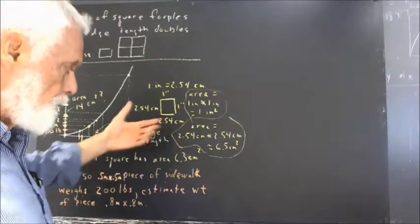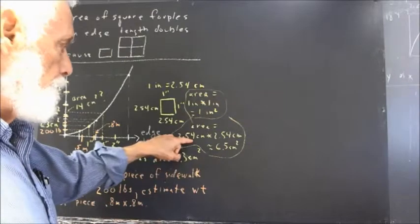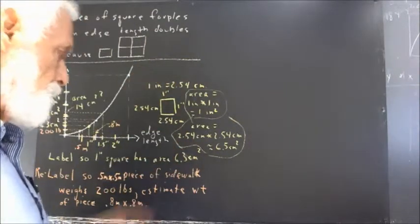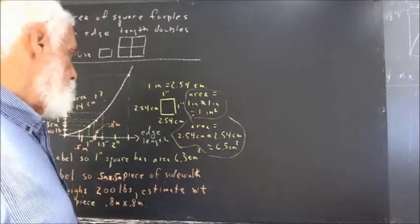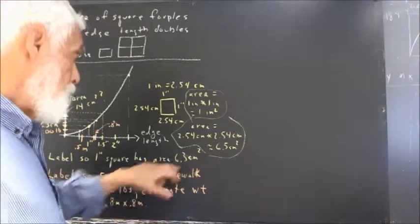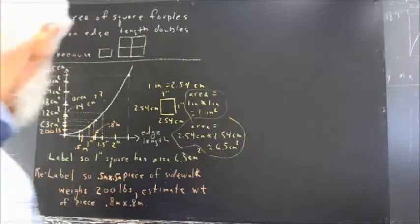2.6 squared is 6.76, so clearly this is going to be between 6.25 and 6.76, and it's going to be pretty close to 6.4 or 6.5 when rounded off. And I think it does end up rounding off to 6.5.